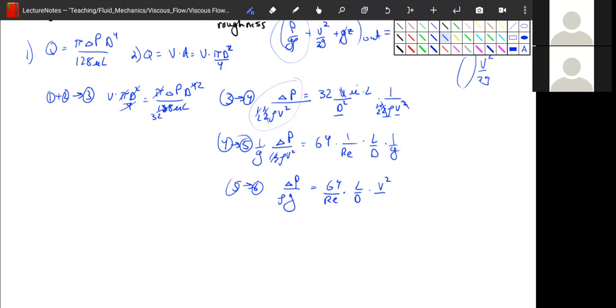We get v squared over 2g. And this is tremendously useful because now this is our head loss major, call it major head loss, but head loss major for fully developed viscous flow.